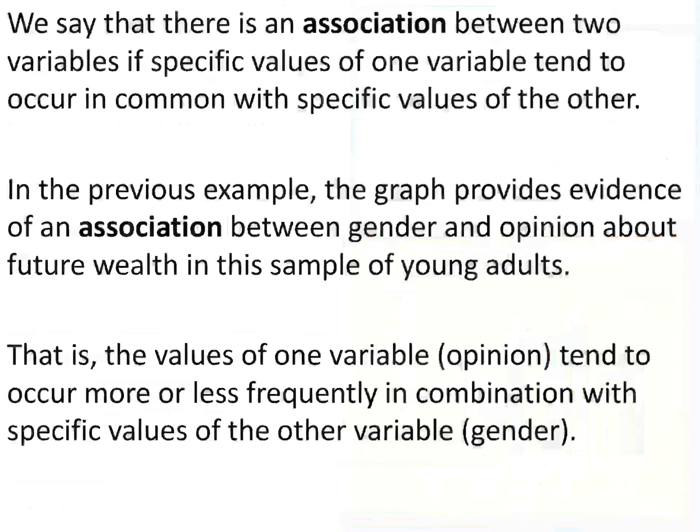There is an association between two variables if specific values of one variable tend to occur in common with specific values of the other. In the previous example, the graph provides evidence of an association between gender and opinion about future wealth in the sample of young adults. This means the values of one variable tend to occur more or less frequently in combination with specific values of the other variable — gender. We say this is an association; we do not say that one causes the other. We don't say that gender causes the opinion to be different.